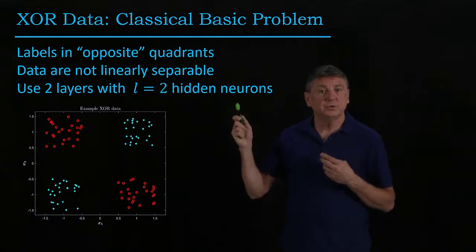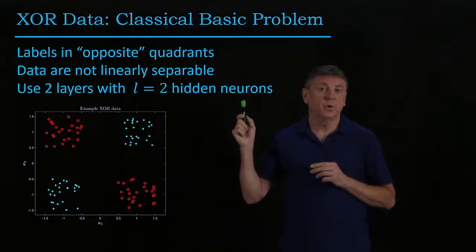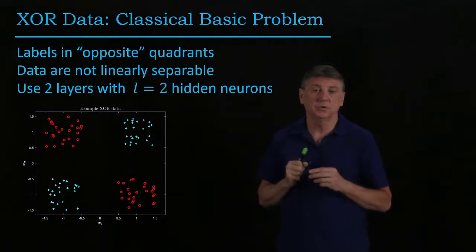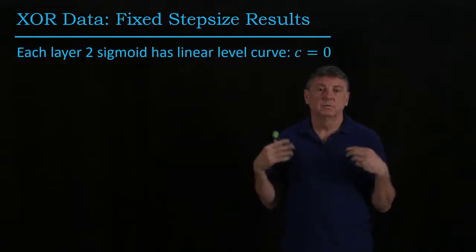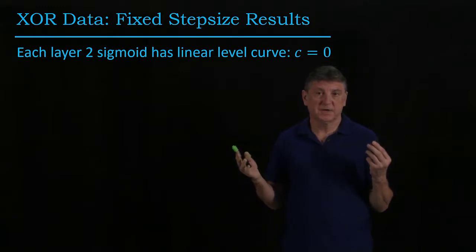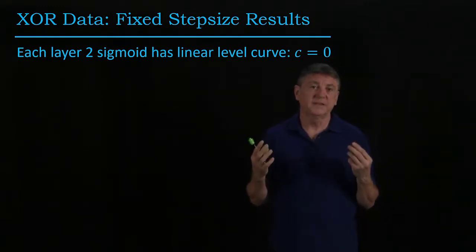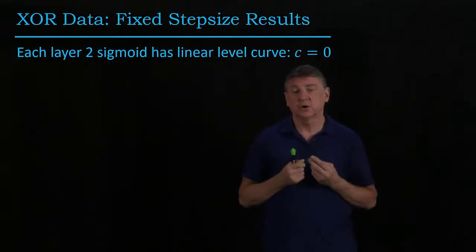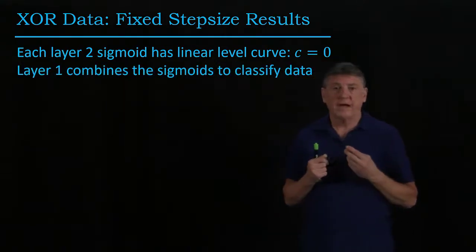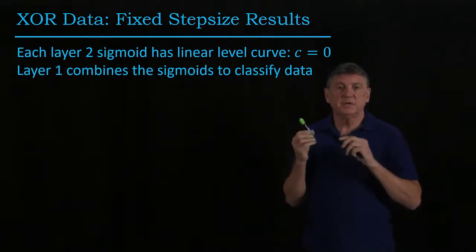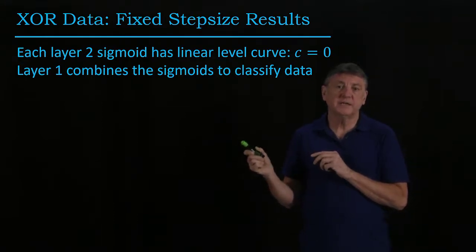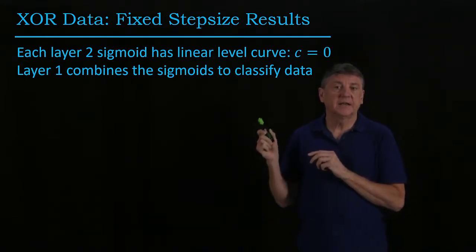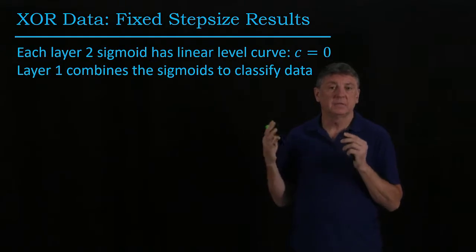We can use two layers, and all we need are two hidden neurons to solve this problem. When I solve this using a fixed step size, so you might think of that in neural networks as being a constant learning rate, what happens is that there will be a hyperplane for each one of those hidden neurons, and then layer one will combine the responses.